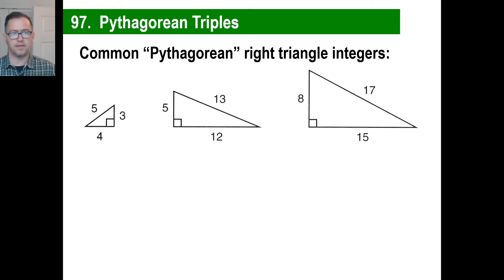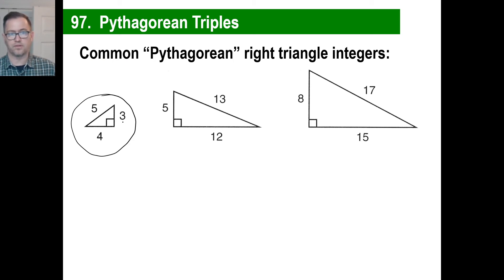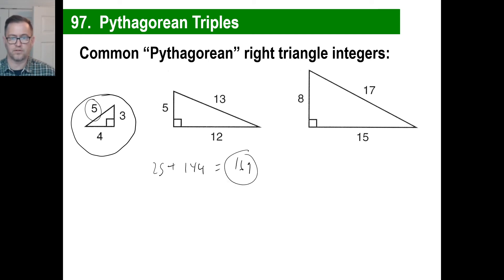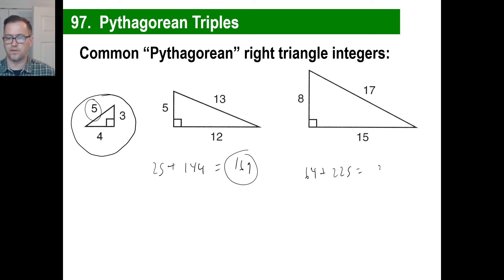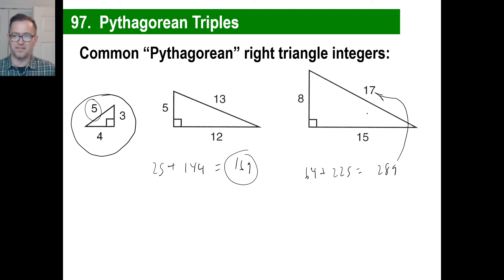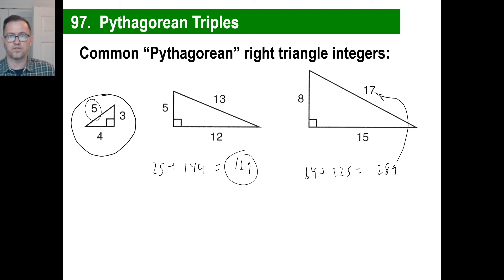Let's look at a couple of these common ones you'll see a lot. The 3-4-5 triangle: four squared is 16 plus three squared is nine — 16 plus nine is 25, and the square root of that is five. Then there's the 5-12-13: five squared is 25 plus 12 squared is 144, which equals 169, and the square root of 169 is 13. And the 8-15-17: eight squared is 64, 15 squared is 225, that whole thing equals 289, and the square root of 289 is 17. You don't have to memorize those, but they're handy to know.